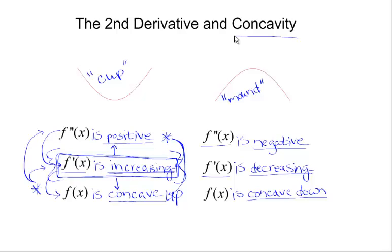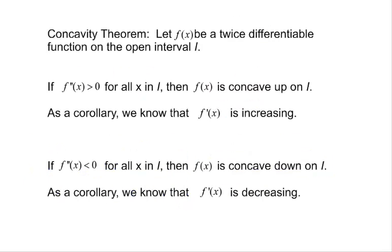Look for being given information graphically or analytically about the first derivative and then answering questions based on that information in both directions. We will revisit relationships of f, f prime, and f double prime in some lessons not too long from now, just as a setup. And just like we had a monotonicity theorem, we've also got a concavity theorem.